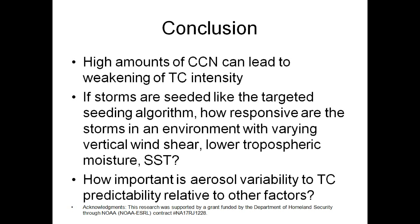If storms are seeded using a targeted seeding algorithm, the response varies. How do other storms respond given varying vertical wind shear? Studies by Mike Montgomery and colleagues found that higher wind shear produces stronger entrainment, particularly in the outer rain bands and stronger cold pools — almost mirroring what we see with aerosol response, and probably the more dominant influence. Lower tropospheric moisture, if you've got a deep moist layer in the storm environment, is less conducive to producing strong cold pools. We also expect sensitivity to variations in SST or stability.